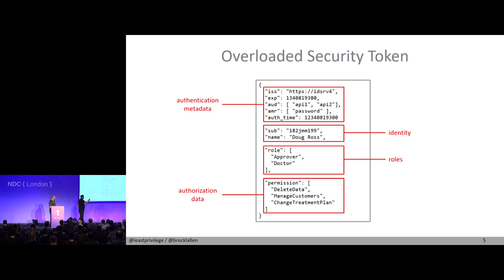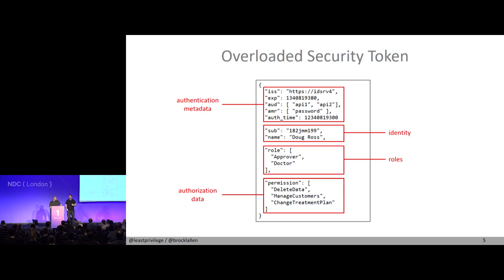If you're coming from a WS-star background, the architecture was typically that you get one token for each physical service you're talking to. In the OAuth world, that's different — you can see the audience claim up top. You typically want to avoid making one round trip per service, so you'd say: give me a token for API 1 and API 2. But what if the user is allowed to change the treatment plan in API 1, but not in API 2? How do you distinguish between those two use cases?